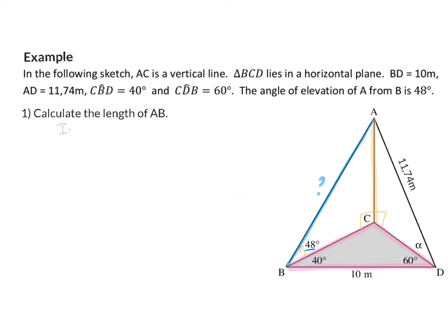So we can start off in our horizontal triangle, triangle BDC. In this triangle, we have two angles and a side, and that means we can use the sin rule.